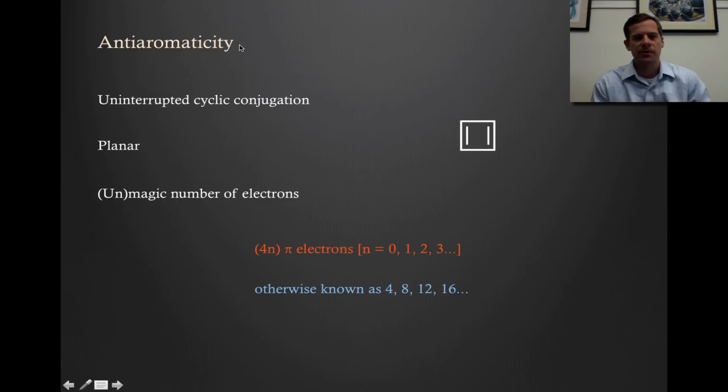We can come up with a set of requirements for antiaromaticity as well. They turn out to be identical to aromaticity. So in order for a molecule to be antiaromatic, it needs uninterrupted cyclic conjugation, it needs to be planar, that's tied into the cyclic conjugation, and then we need this unmagic number of electrons. We need 4n pi electrons in order to have antiaromaticity.